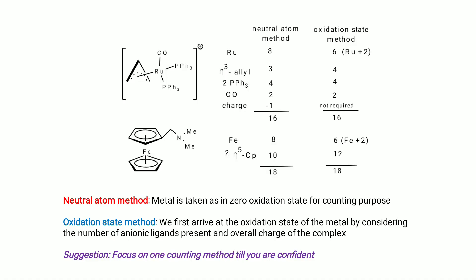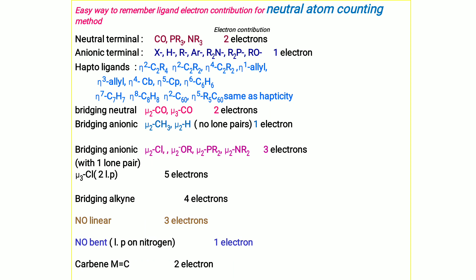The neutral atom method takes the metal in zero oxidation state for counting purposes. In the oxidation state method, we first determine the oxidation state of the metal by considering anionic ligands present and overall charge of the complex. Focus on one counting method until confident — don't use both simultaneously. For example, a given compound may give 16 electrons by both methods, and for a ferrocene derivative, both methods give 18 electrons, though the processes differ.